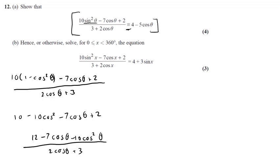So what we need to spot now is that the numerator can be factorised. If we rewrote our numerator as 12 minus 7x minus 10x squared, it becomes a little bit more apparent that it can be factorised.